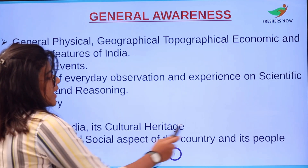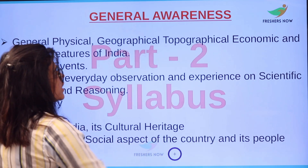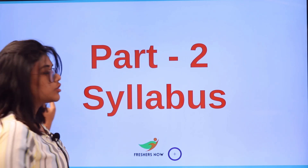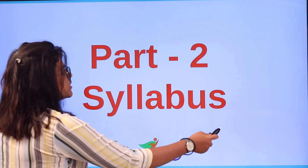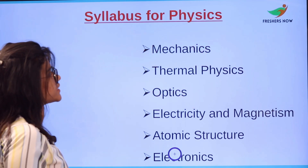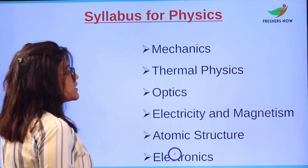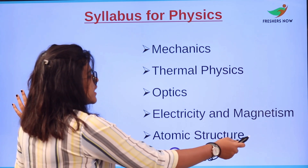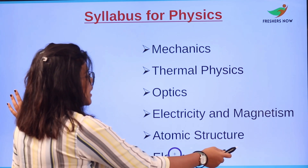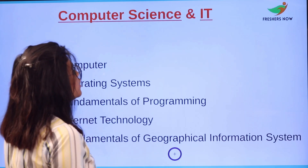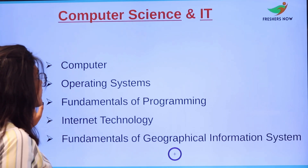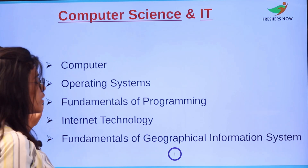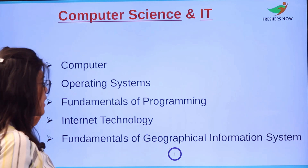For Part 2, the syllabus is as follows. For Physics: mechanics, thermal physics, optics, electricity and magnetism, and atomic structure. For Computer Science and IT: computer operating systems, fundamentals of programming, internet technology, and fundamentals of geographical information systems.